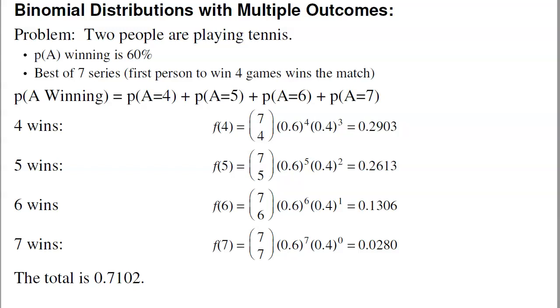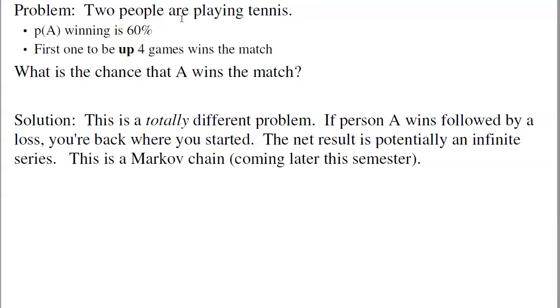Second problem is two people are playing tennis, but instead of winning four games, they have to win by four games. That's a totally different problem. If A wins, then B wins, I'm back where I started. In theory, that could be an infinite series. That's a Markov chain. That's not a Bernoulli trial. That's going to come up later.